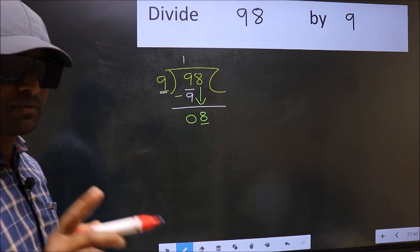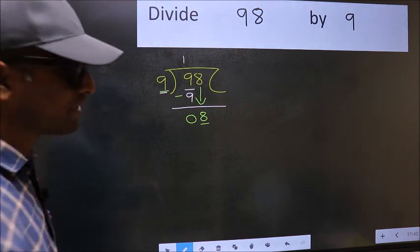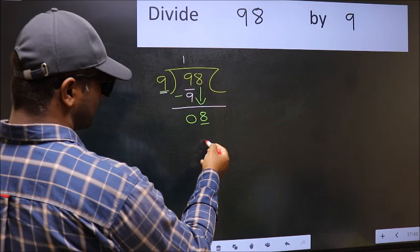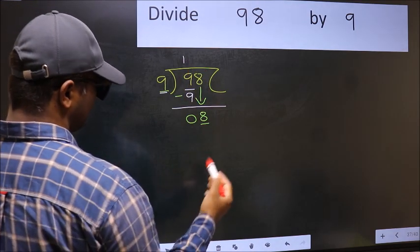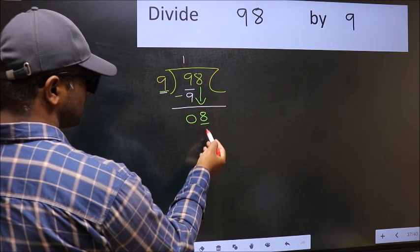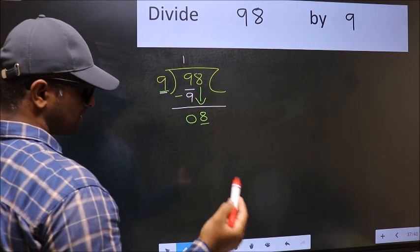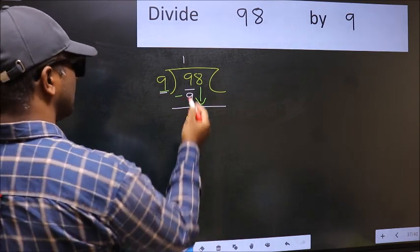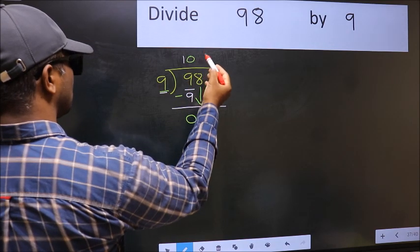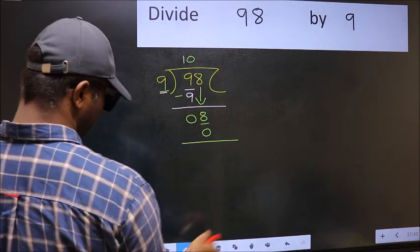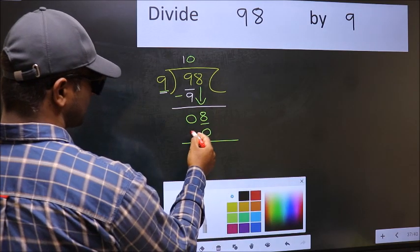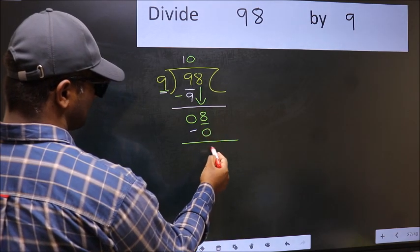Instead, what you should think of doing is, which number should we take here. If I take 1, we will get 9. But 9 is larger than 8. So what we should do is, we should take 0. So 9 into 0, 0. Now you should subtract. 8 minus 0, 8.